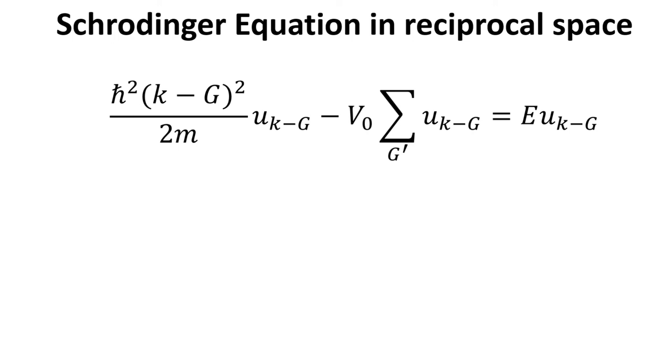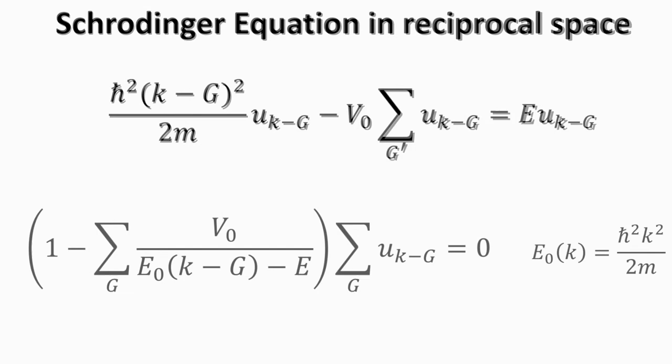Now, we can rearrange the terms and sum the full expression in G to obtain the following, where we have defined E naught of K as the kinetic energy of free electron.